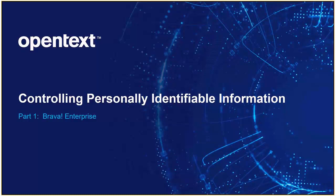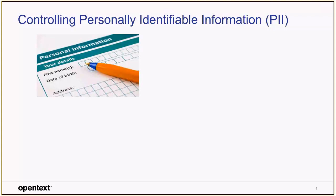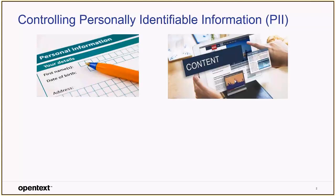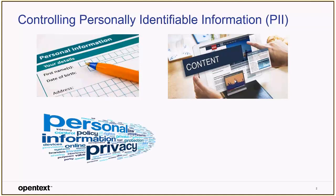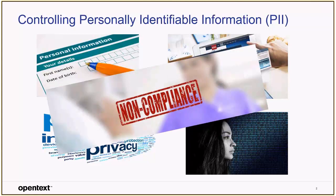Welcome to part one of the demo series on controlling capture and retrieval of personally identifiable information using Brava Enterprise. My name is Dave Hinkle, and I'm a solutions consultant at OpenText. Virtually all industries have personally identifying information within their business documents. PII is stored in both structured and unstructured documents. Privacy laws are changing at a rapid pace, and many regulations govern the disclosure of PII. Failure to adequately control disclosure of PII can lead to fines and other penalties for noncompliance.